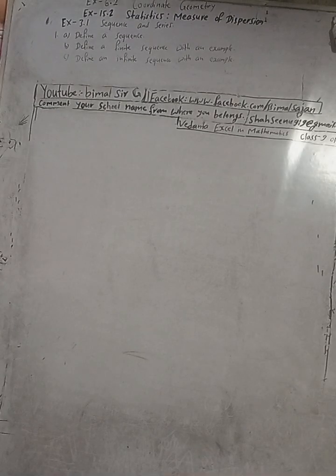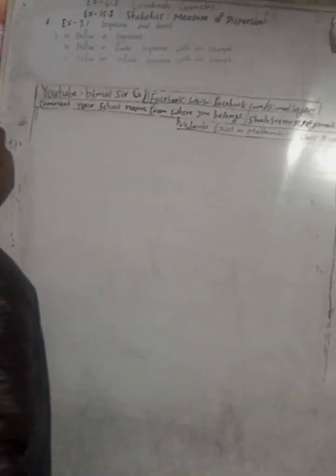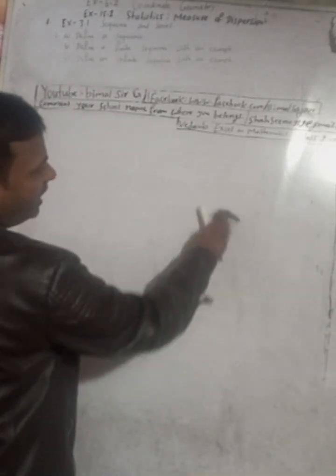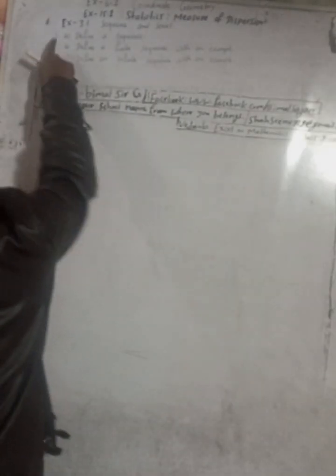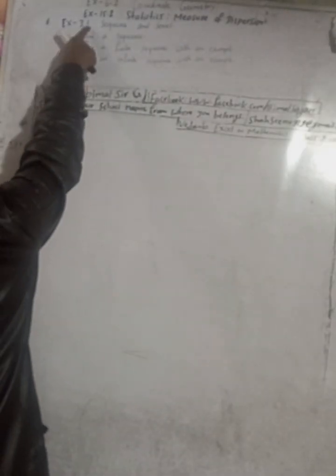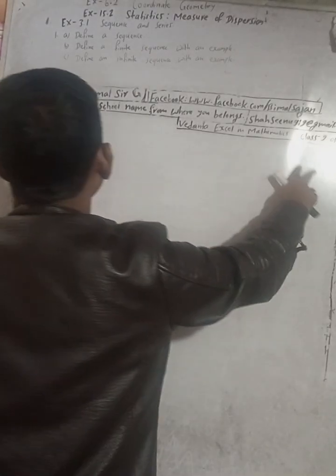Hi Class 9 and 10 students, welcome back to Bimal Sharjee YouTube channel. In this cold season, I am here to warm up your days and nights with exciting content. Let's make it a little warmer with mathematical solutions of Class 9 and 10. The question number is one, from Exercise 3.1, Sequence and Series, Vedant Excel in Optional Mathematics Class 9. Check the playlist — you will get a lot of solutions.